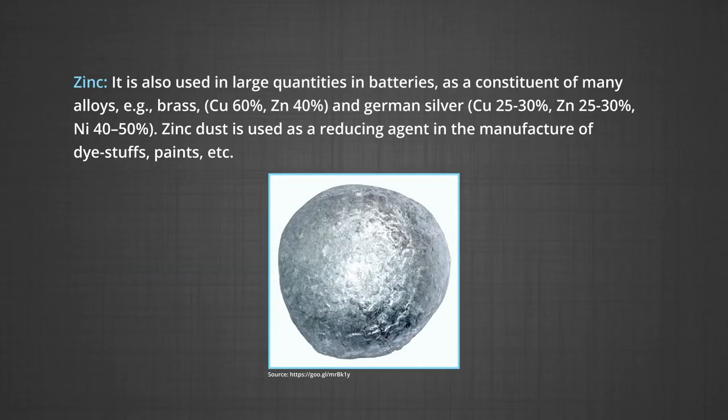Now, the uses of zinc. Zinc is used for galvanizing iron. It is also used in large quantities in batteries as a constituent of many alloys. For example, brass contains 60 percent copper and 40 percent zinc and German silver contains 25 to 30 percent copper, 25 to 30 percent zinc and 40 to 50 percent nickel. Zinc dust is used as a reducing agent in the manufacture of dye stuffs, paints, etcetera.